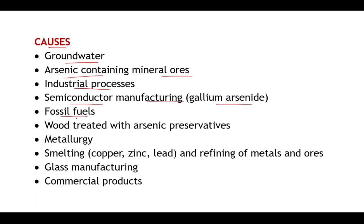Fossil fuels may also lead to arsenic exposure. Wood treated with arsenic preservatives is another source, as arsenic may be used to preserve wood for longer periods. Metallurgy — the process of heating and treating metals, including smelting to obtain pure metals like copper, zinc, or lead, and refining of metals and coals — may also involve arsenic utilization.